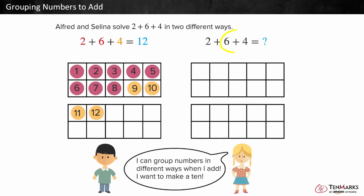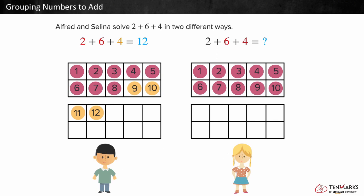Selena wants to add 6 and 4 first to make a 10. Let's see what happens. How many more counters does she need to add? Selena already added 6 and 4, so she still needs to add 2. The total is 12.